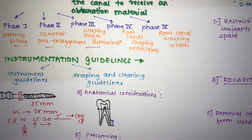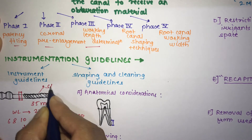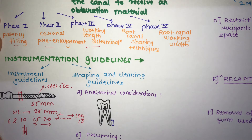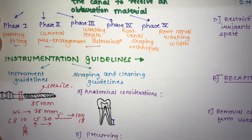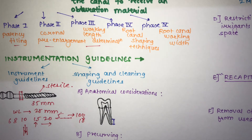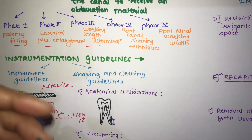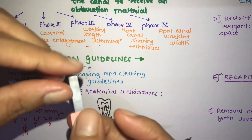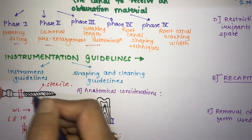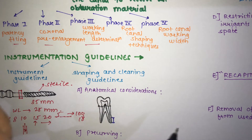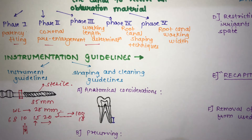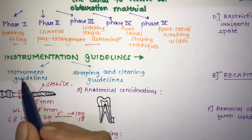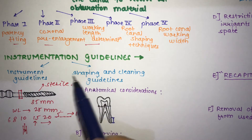The third guideline is that all instrumentation should be done using sterile instruments. The fourth guideline is that instruments should be checked for any deformation and discarded if deformation is present. If the flutes are strained or the instrument has a curve or deformity, you must discard it and use a new one. These are the four main instrument guidelines.